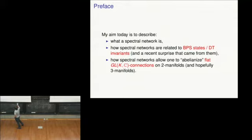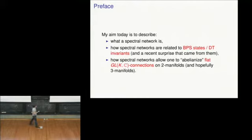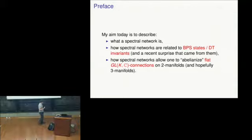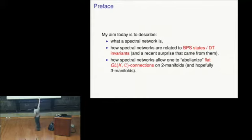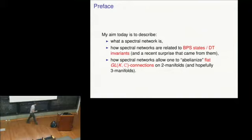The second use of spectral networks is an application that seems a priori unrelated to DT invariants. It's just a question of studying the moduli of flat GL_K connections on a two-manifold — studying the character variety. Spectral networks provide a very convenient way of replacing these non-abelian GL_K connections with just GL_1 connections — abelianizing the connections, not on the original manifold, but on some K-fold cover of the manifold. Very roughly speaking, any question about a non-abelian connection gets replaced by a hopefully easier question about an abelian one. That's part of the story developed with Giotto and Moore last year. Very recently, in joint work with Dan Fried, we are trying to develop the three-manifold version, which has to do with Chern-Simons theory.